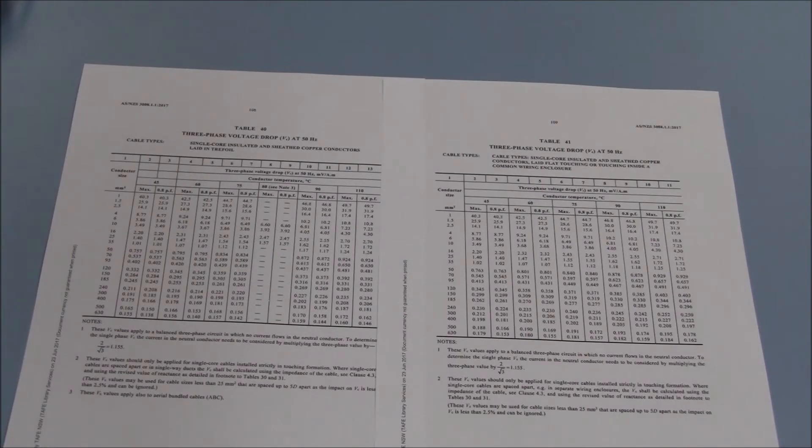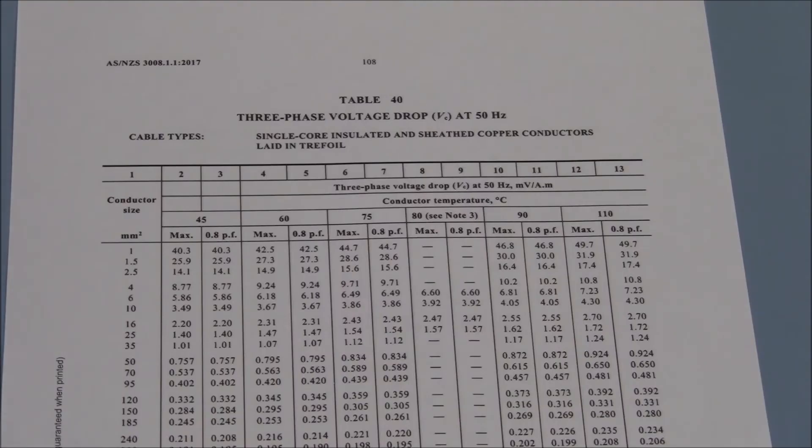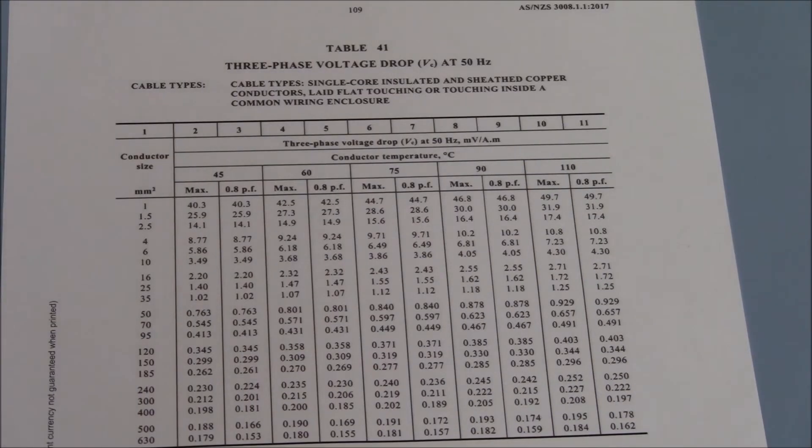Our value of VC will come from either table 40 or table 41 as they relate to copper SDIs. Table 40 is for copper SDIs installed in trefoil. Table 41 is for copper SDIs installed in any other situation or fashion, be it underground like in this example or whatever.